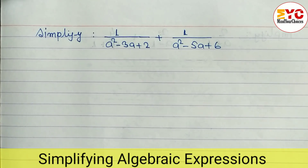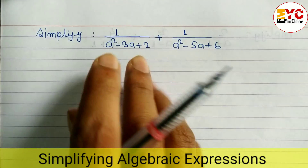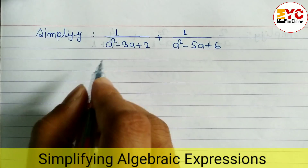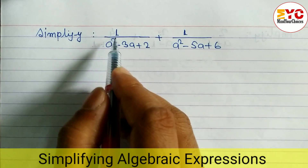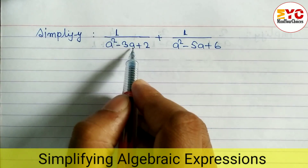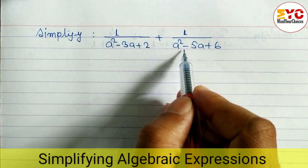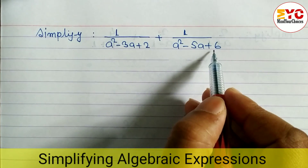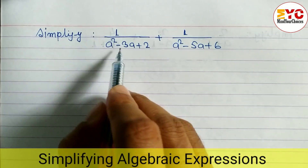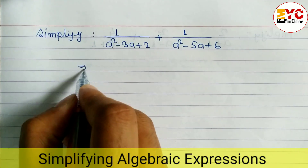In this video we will learn how to simplify algebraic expressions, taken from class 8 equation bank. We have 1/(a²-3a+2) and 1/(a²-5a+6). What we have to do is factorize these two expressions and then find the LCM.